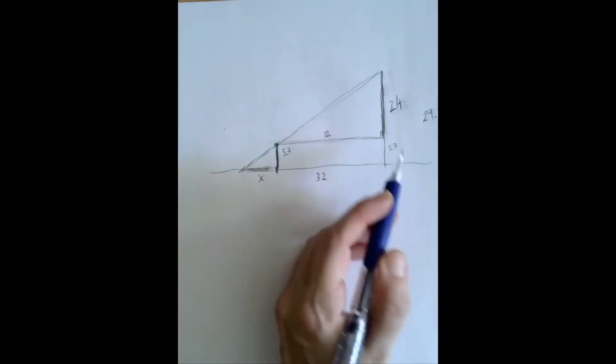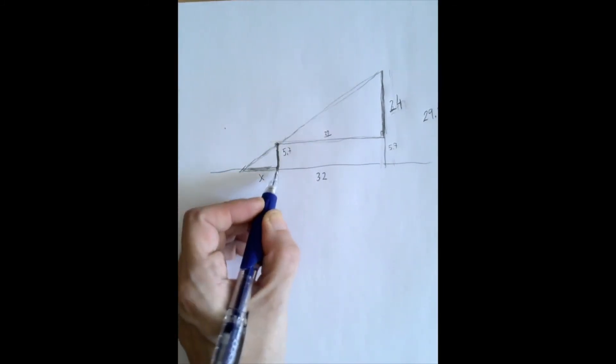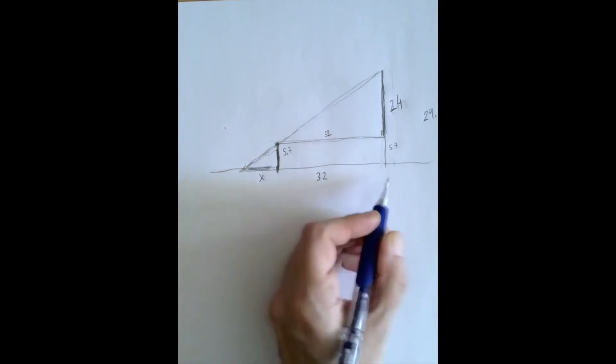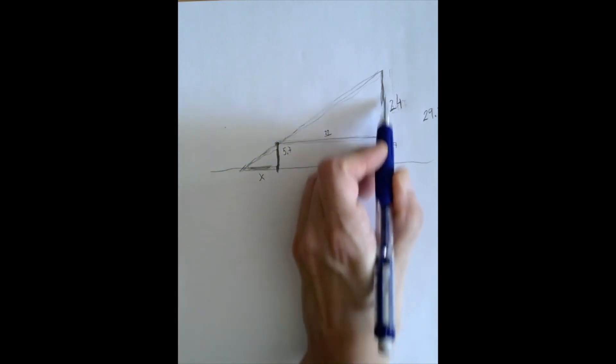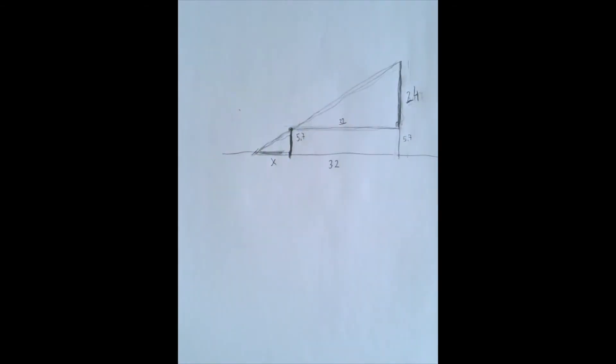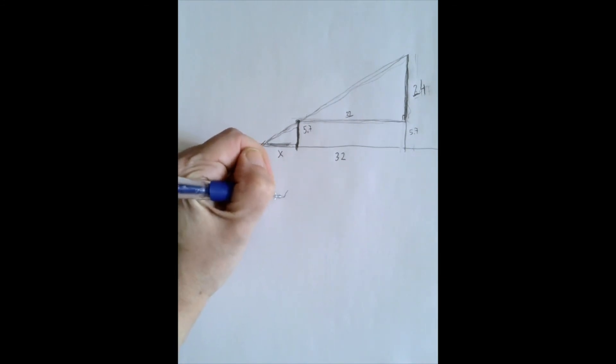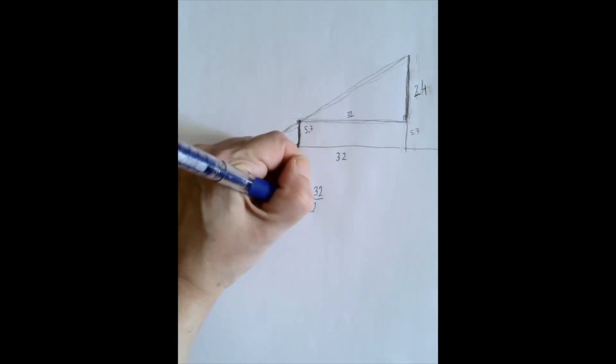And now the two similar triangles that we're looking at is this one, and instead of the big one before, this one. X is only in one of the triangles, right? So if we do, again, horizontal over vertical, then we get x over 5.7 equals 32 over 24.